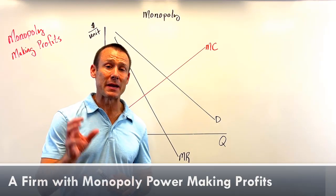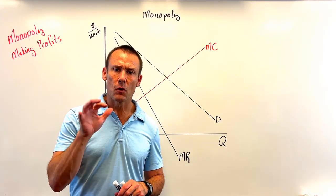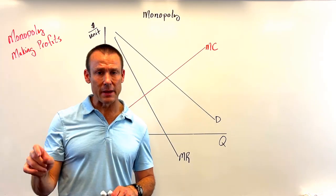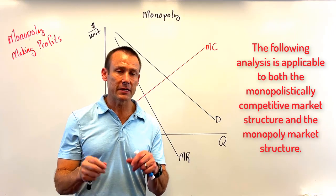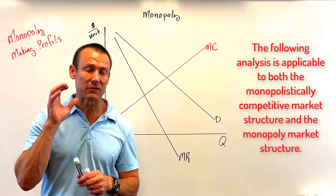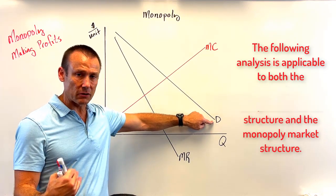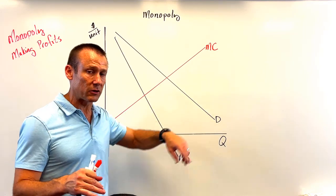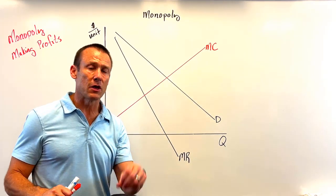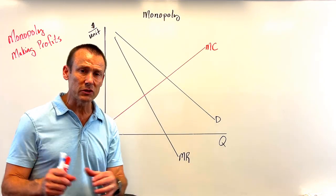In this video we're showing a monopoly making profit, but I really want to broaden this out. What we're basically doing is showing any firm that has market power making profit. Monopolistic competition and monopoly are just about the exact same, because in both situations the firm faces a downward sloping demand curve. The firm is the market and the market is the firm.